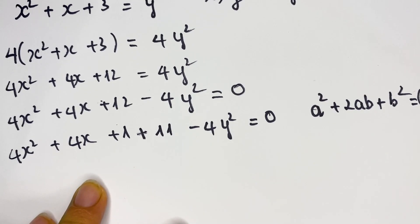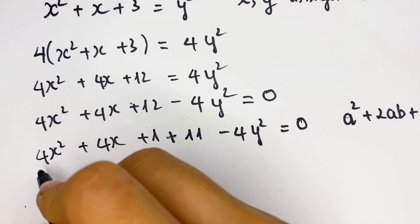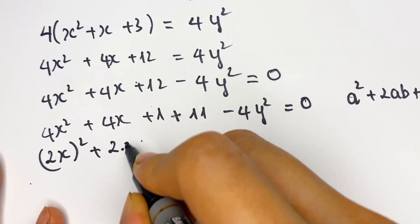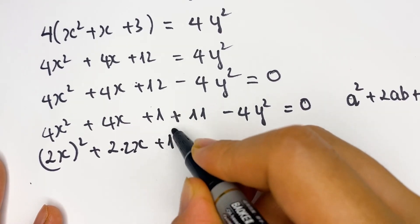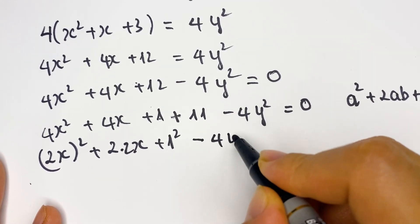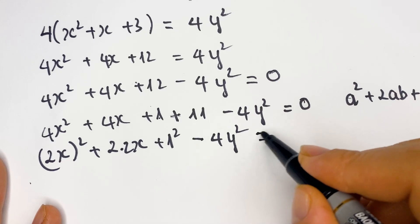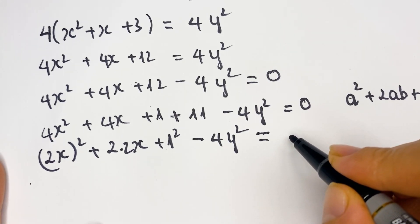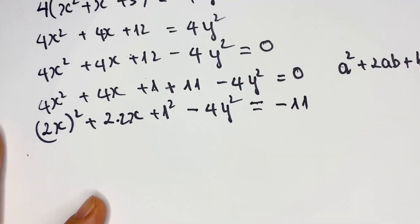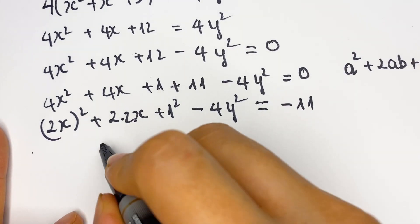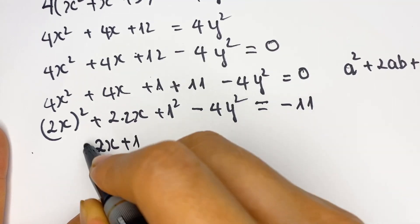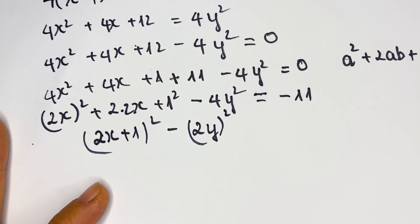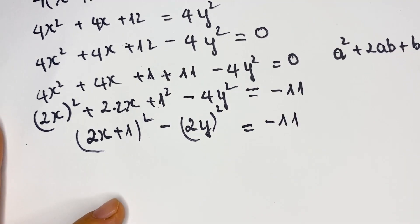This is the sum of squares identity. So everyone can see that 4x squared plus 4x plus 1 equals (2x plus 1) squared. Subtracting 11 from both sides gives us (2x plus 1) squared minus (2y) squared equals 11.